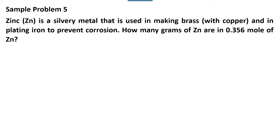Hi everyone, it's me again. In this video, this is part three of our solving stoichiometry problems. Sample problem number five: Zinc is a silvery metal that is used in making brass with copper and in plating iron to prevent corrosion. How many grams of zinc are in 0.356 mole of zinc?